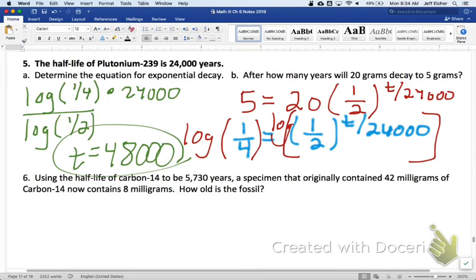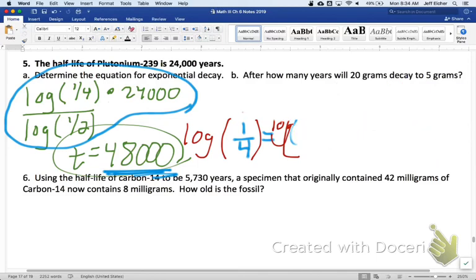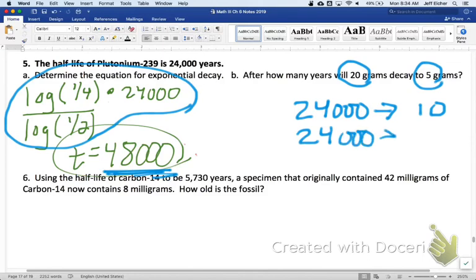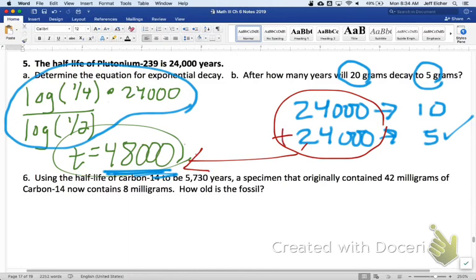So, after logging both sides, bringing the exponent down out in front, isolating t, I get this kind of work right here. And I get t is 48,000 years. Now, I want to do this to point out, notice you started at 20. We started at 20. We ended at 5, which is a quarter of 20. If it takes 24,000 years to halve, then that means after 24,000 years from 20, now we're down to 10. If we have another 24,000 years to halve, now we're down to 5. And that's what the very question is about. So, how many years have passed? Well, add those and you get 48,000 years.